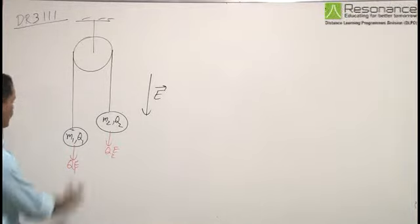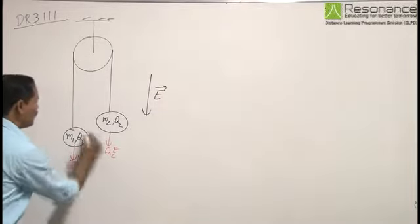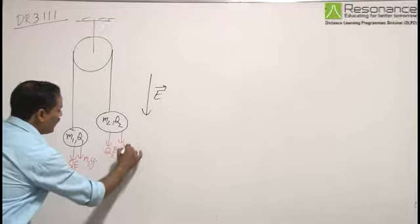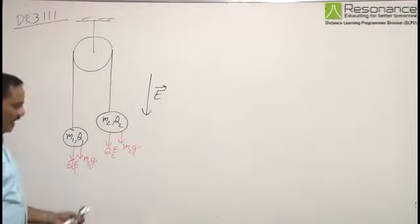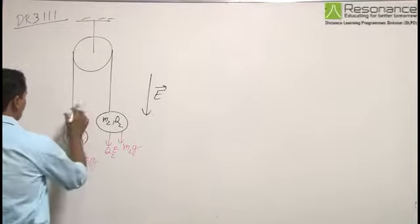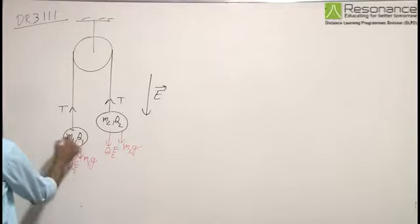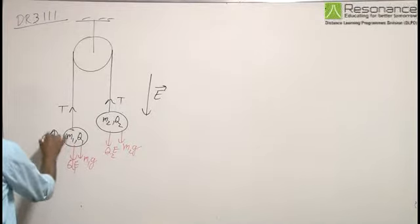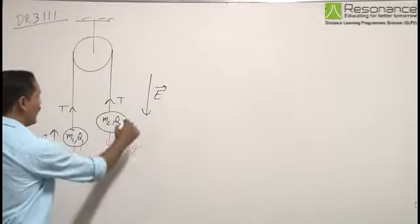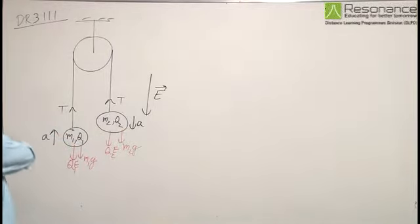Apart from this, because of weight, there is a downward force M1g on M1 and M2g on M2. Let us assume tension in the string to be T, and let us assume that M1 is accelerating upward with acceleration A and M2 is accelerating downward with acceleration A.